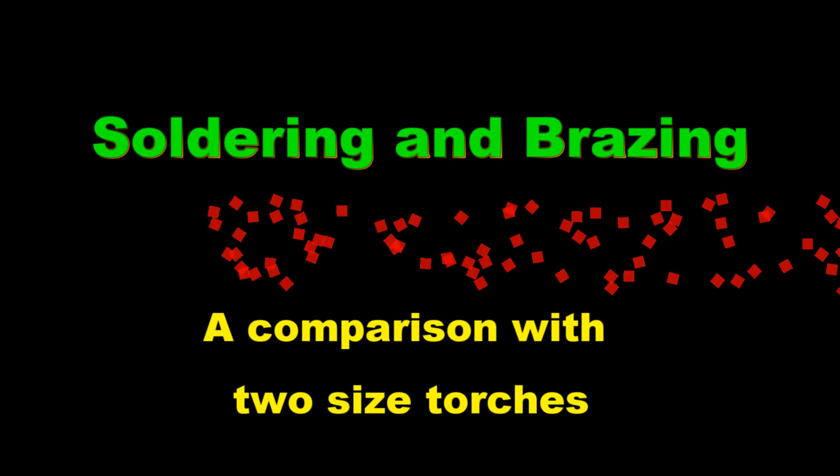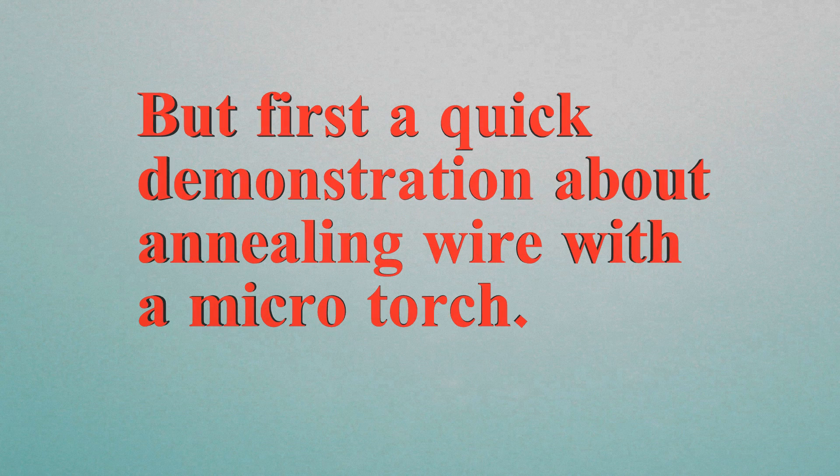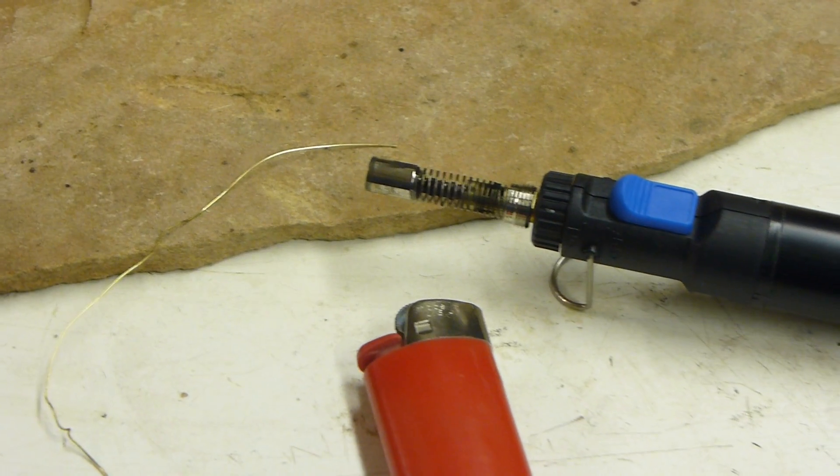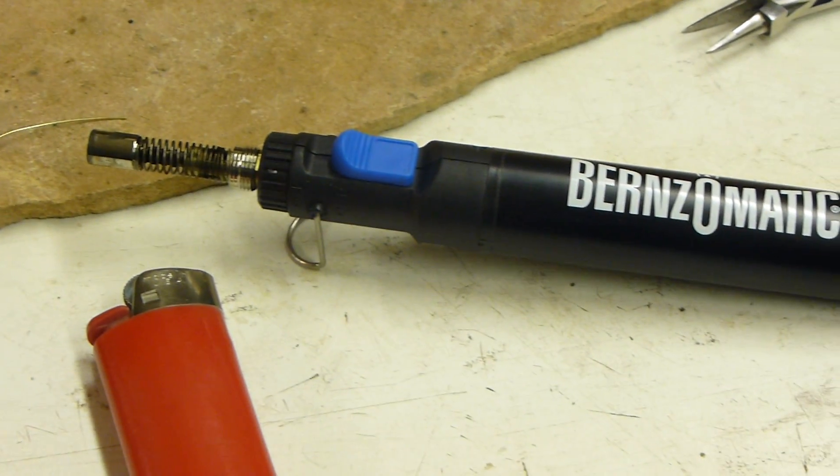I recently bought a small hand torch and decided to run a few experiments such as annealing wire. The little torch does not have a self-igniter, so you have to use an open flame like this simple lighter, but it is handy.